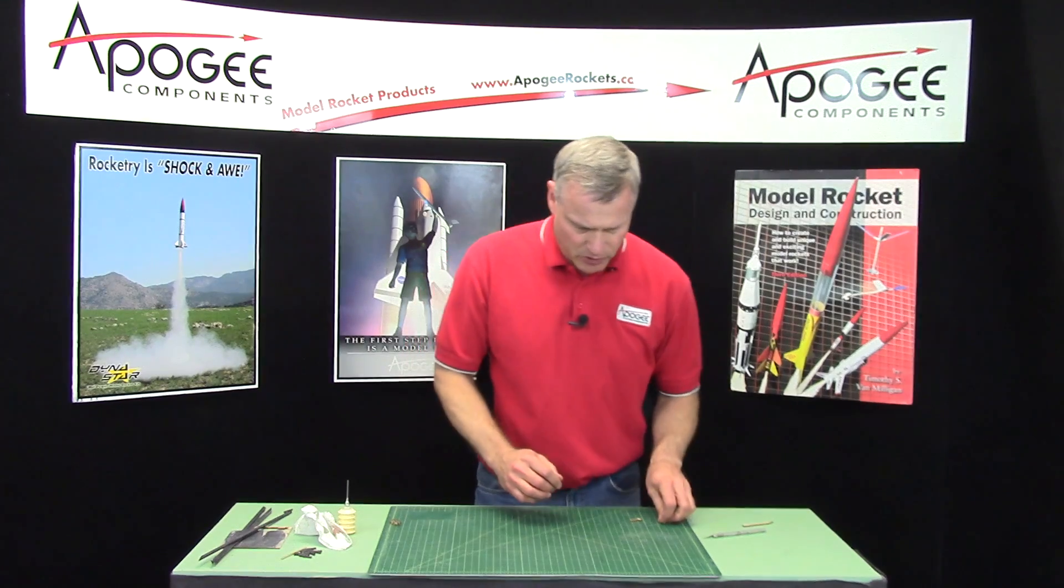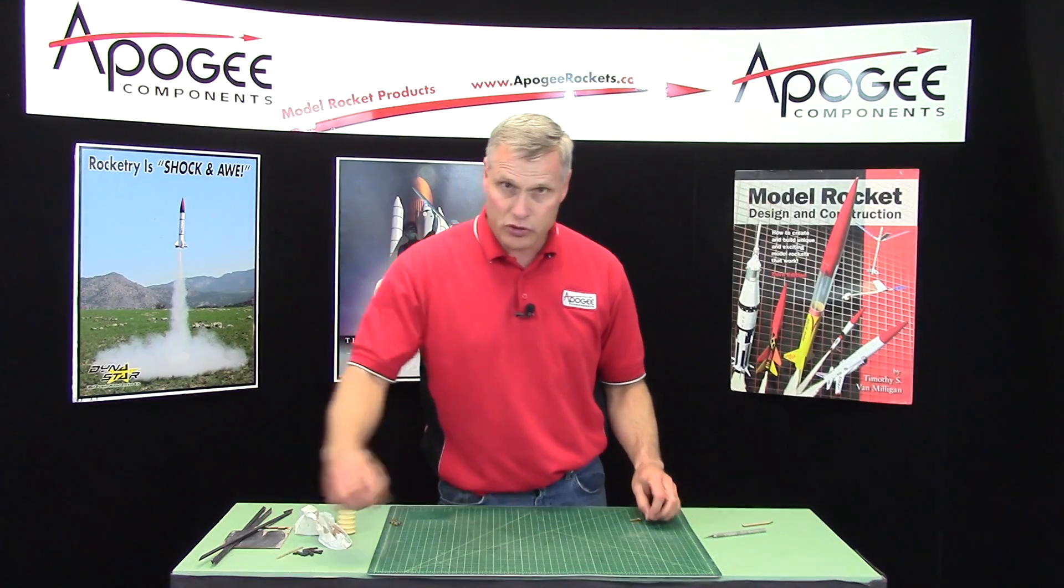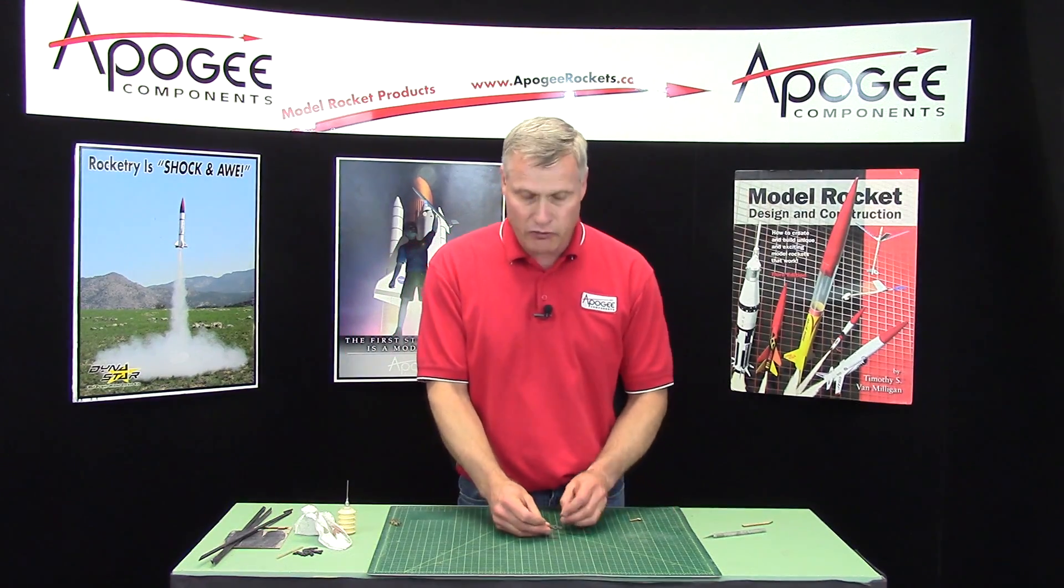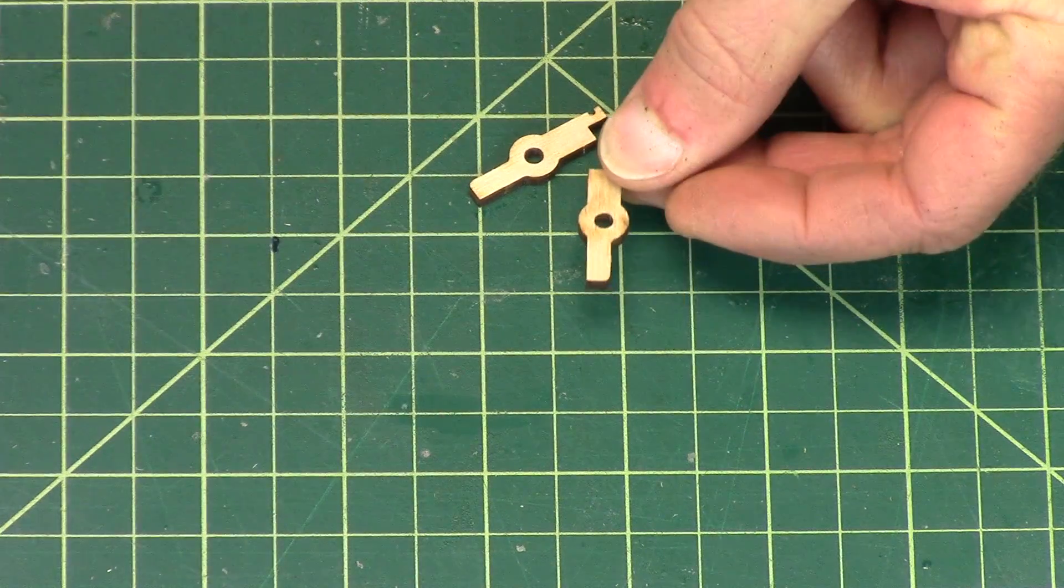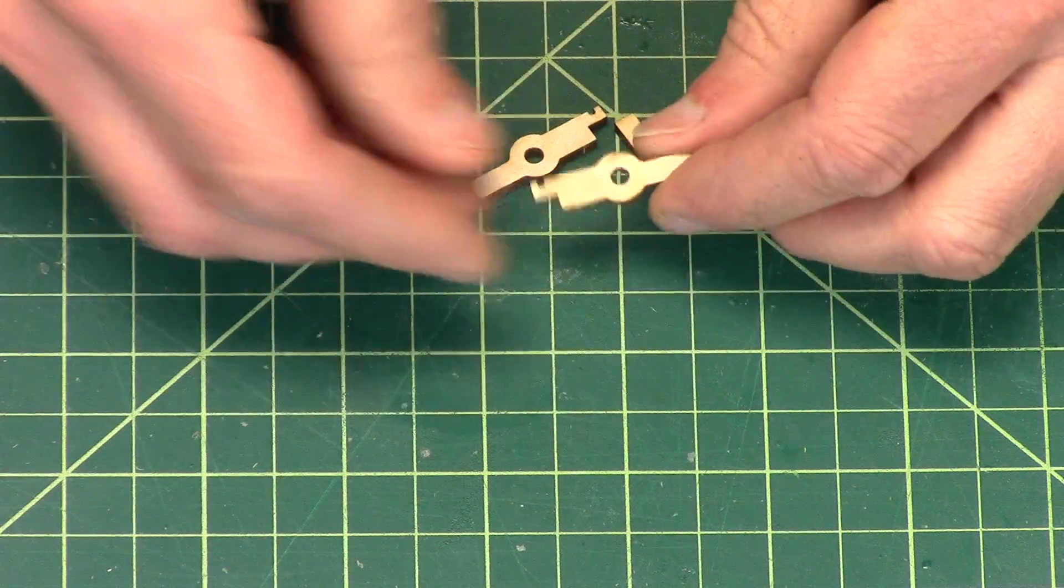Okay, to assemble this, again, yours should be black right now because you've already stained them. But because it's a little harder to see on the video, I'm going to show you some that are just natural wood.